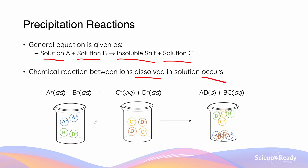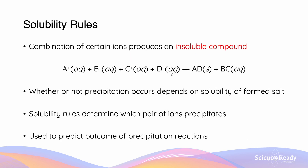In the image we can see that solution 1 contains A and B ions, and solution 2 contains C and D ions. When these ions are mixed together, the A+ cation from solution 1 and the D- anion from solution 2 react with one another to form the solid substance AD. Meanwhile, B- and C+ will not react with one another and will remain in solution. Why is it the case that A and D form a solid but B and C do not? This is where we need to consider the solubility rules.